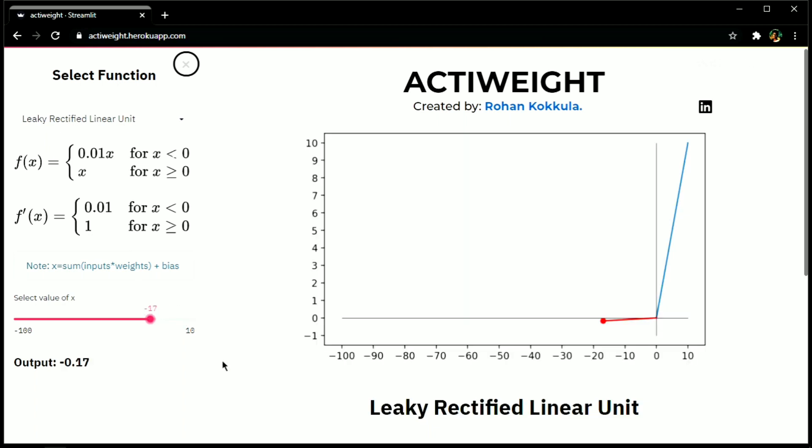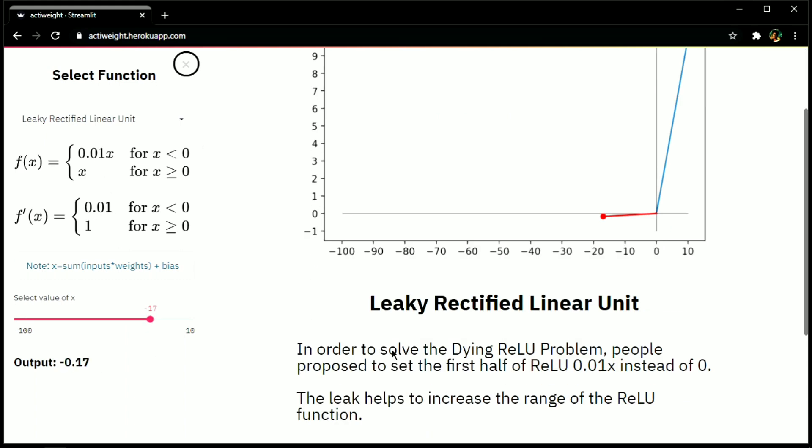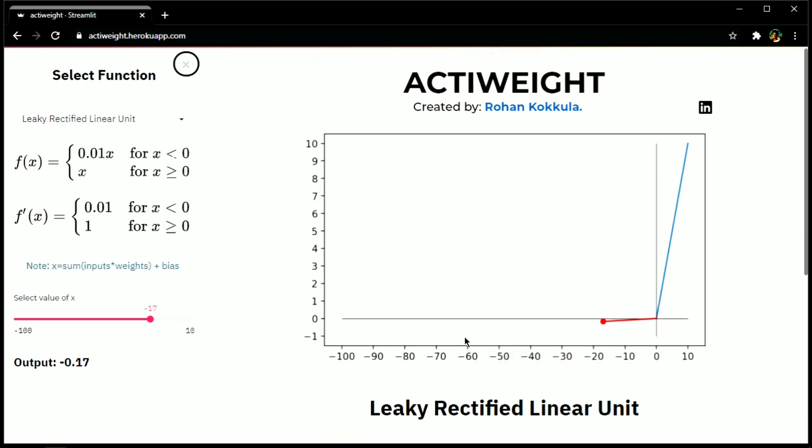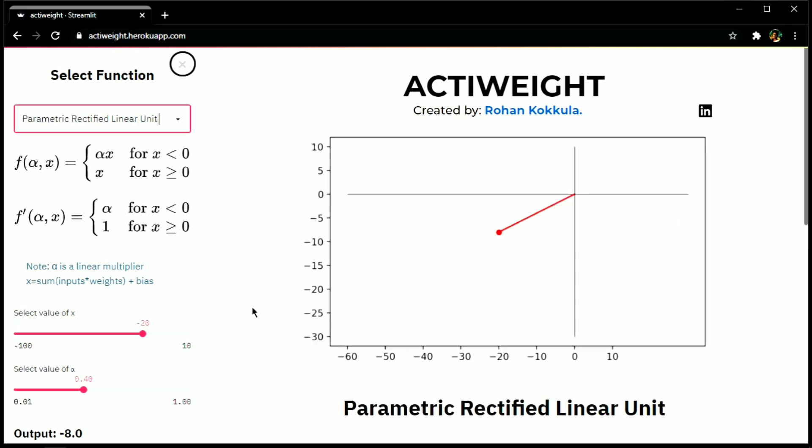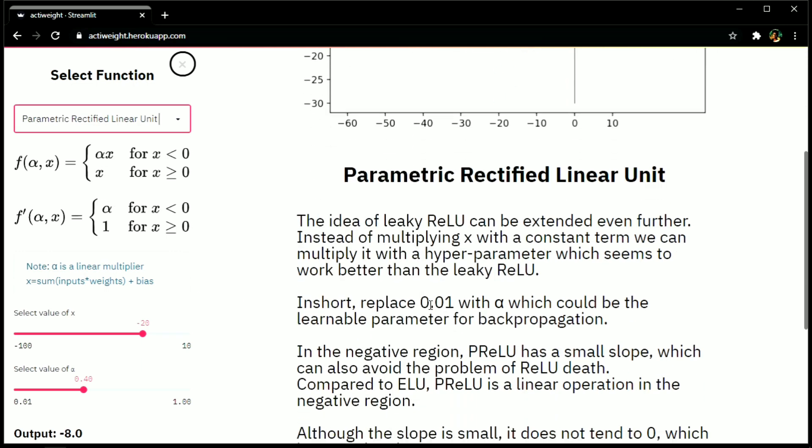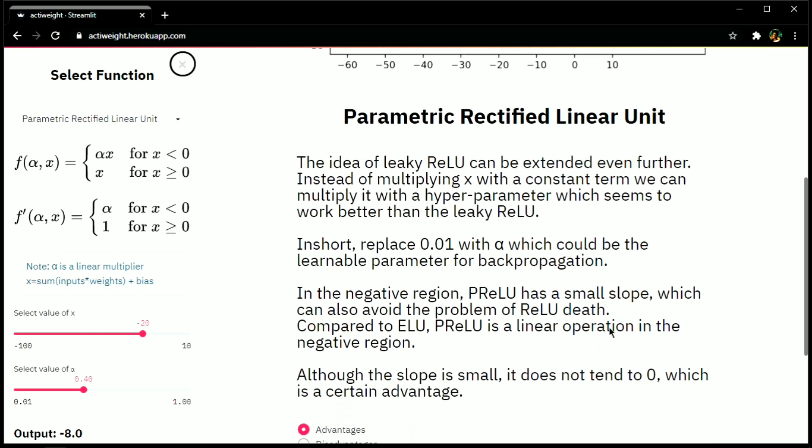Since 0.01 is a constant multiplier of x, what if we will convert this into a learnable parameter which comes from backpropagation? Oh yes, we already have it in parametric relu function. If you will replace this alpha with 0.01, it will act as a leaky relu function. So by doing this, we give more power to the neuron in terms of learnability for backpropagation.